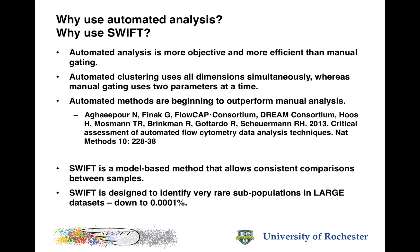The simultaneous use of all dimensions allows much more precise boundaries to be defined for the various cell subpopulations. It is now clear that automated methods are beginning to outperform manual analysis, as shown for example in the FlowCAP competitions. In particular, Swift is a model-based method that allows consistent comparisons between samples, and Swift is particularly designed to find very rare subpopulations — down to better than one part in a million in very large datasets.